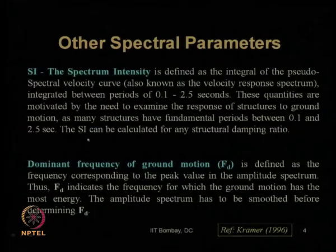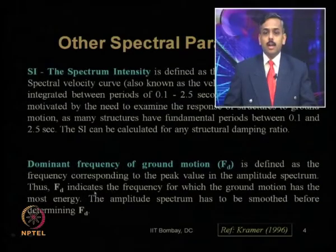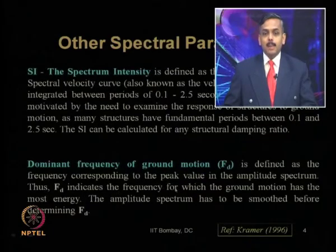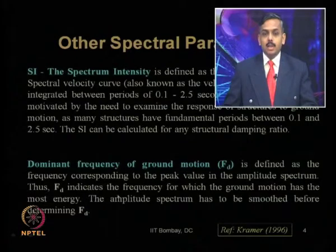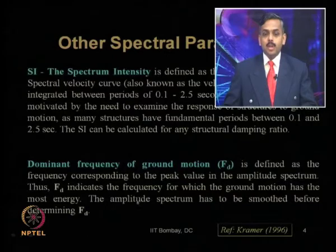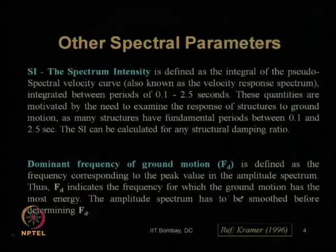Spectrum intensity can be calculated for any structural damping ratio. Then we saw the dominant frequency of ground motion, denoted as f_d — defined as the frequency corresponding to the peak value in the amplitude spectrum. This f_d indicates the frequency for which the ground motion has the maximum energy, and the amplitude spectrum must be smoothed before obtaining f_d.